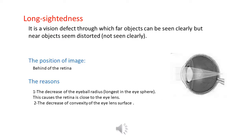Long-sightedness is a vision defect through which far objects can be seen clearly, but near objects seem distorted. The image is formed behind the retina. The reasons include: a decrease in the eye bulb radius, which causes the retina to be too close to the eye lens, and a decrease in the convexity of the eye lens.